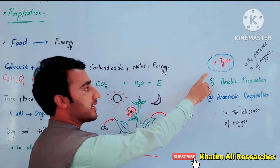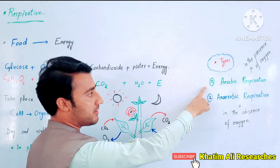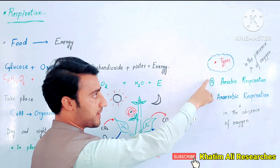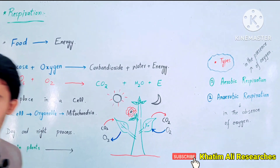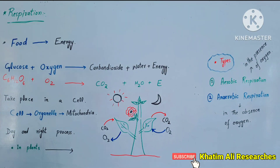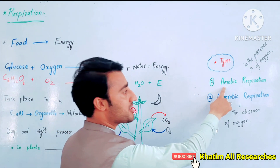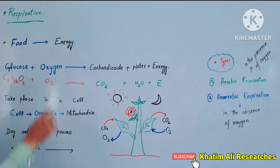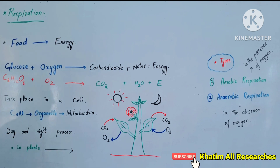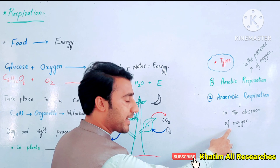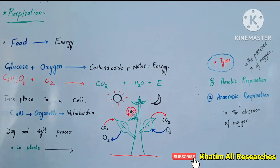There are two types of respiration: aerobic respiration and anaerobic respiration. Aerobic respiration occurs with oxygen, while anaerobic respiration occurs in the absence of oxygen.